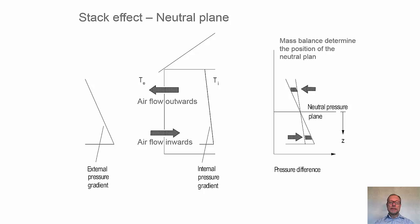But since we must have an air balance, a mass balance, air that flows in due to pressure difference and air that flows outwards due to pressure difference, there must be equal amounts flowing in and out. And then a neutral pressure plane will be developed where we have the same pressure inside and outside.